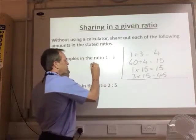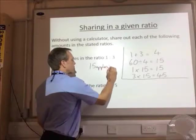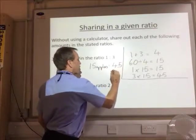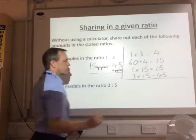So my answer over here is 60 apples in the ratio 1 to 3, 15 apples to 45 apples. That's the answer there.